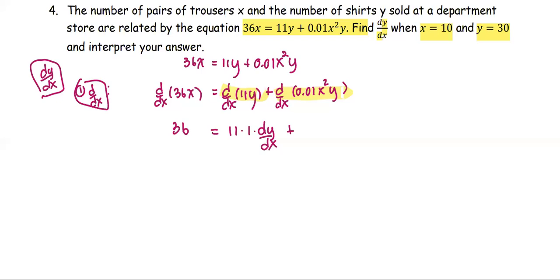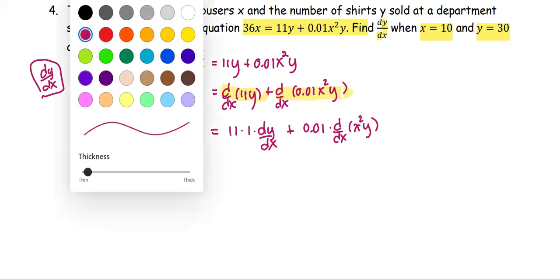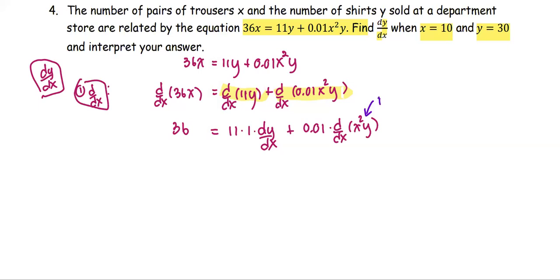Plus the last term is the constant 0.01 multiplied by the derivative of the product x² times y. So we're going to treat this part as a product.